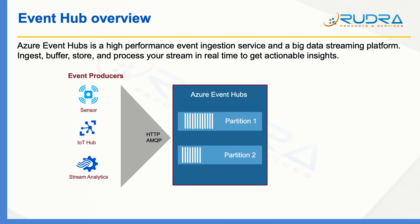Within Event Hub you can have multiple partitions. Multiple partitions enable you to parallel process the events by different applications. You can also use partitions to segregate the data. For example, you can configure it so that all the temperature readings are stored in one partition, all the vending machine sensor readings in partition 2, and all the coffee machine sensor readings in partition 3.